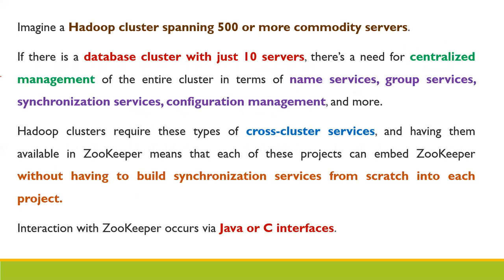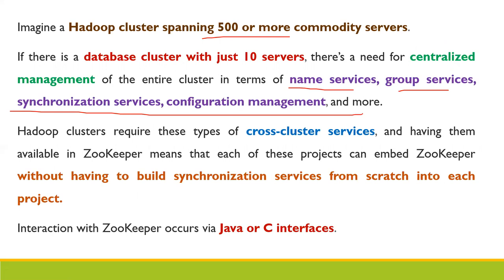Imagine a Hadoop cluster consisting of 500 or more commodity servers. Even with a cluster of just 10 servers, there is a need for centralized management of the entire cluster. The cluster requires services like name service, group service, synchronization services, and configuration management. Hadoop clusters require these cross-cluster services, and having them in Zookeeper means each project can embed Zookeeper without having to build synchronization services from scratch.